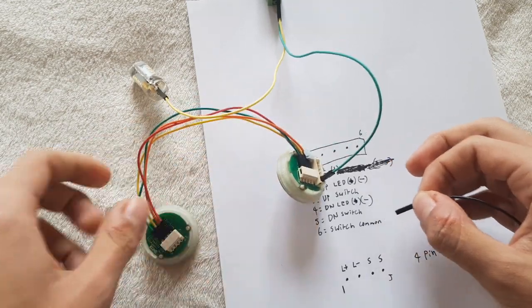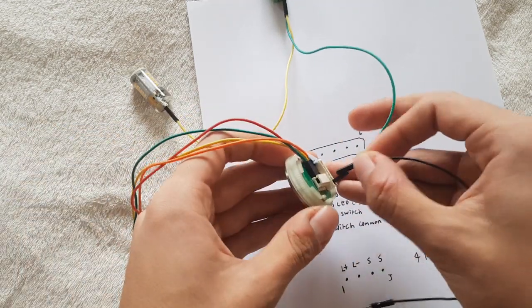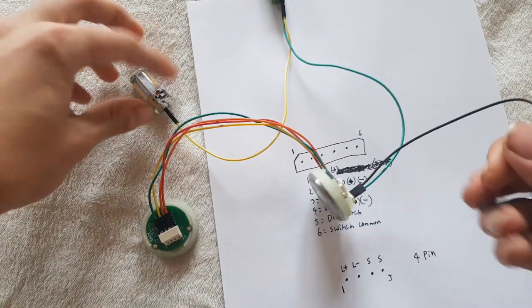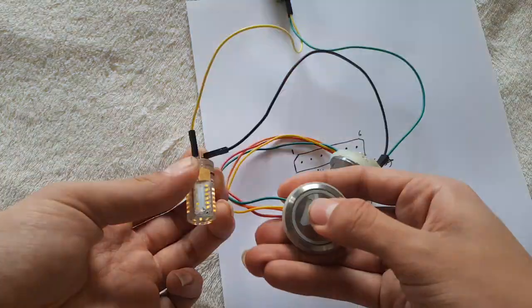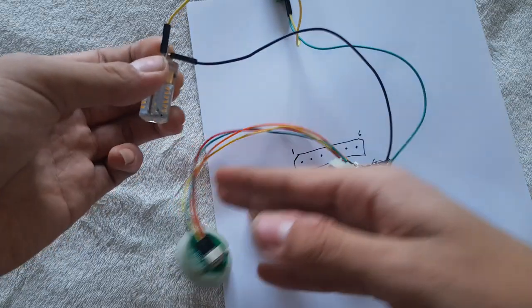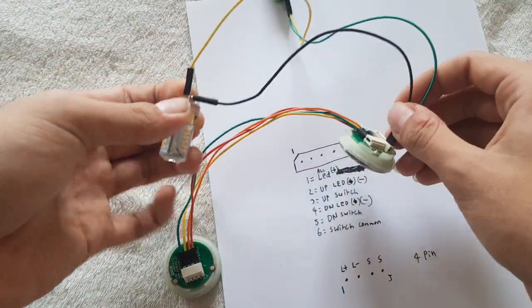If I wanted to use the down switch, so this switch here, I would hook it up to pin five, like that. Let's just touch that there. So that's pin five, the down button.